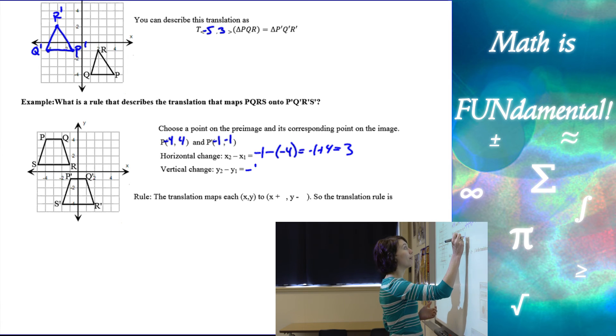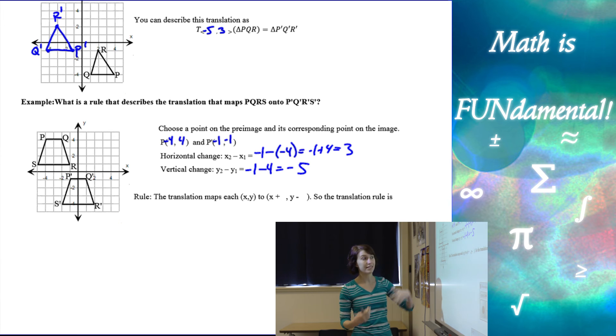Vertical change, negative 1 minus 4 is going to be negative 5. Or in other words, we moved 5 down.